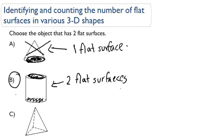Alright, so that's right. And then this last one, we'll just go through it anyways. This is a bit of a pyramid. So this has one flat surface here, another one here — so that's two, three. And then this face, this whole face, this front part — that's four flat surfaces.